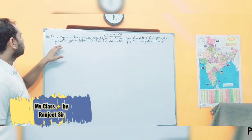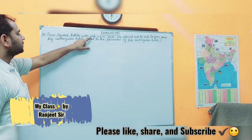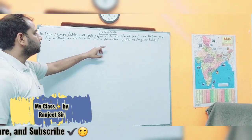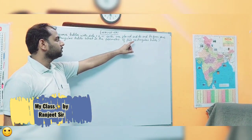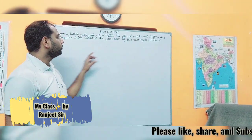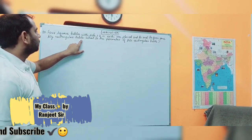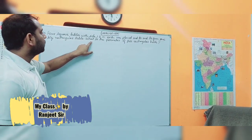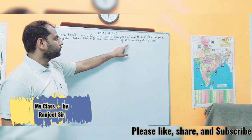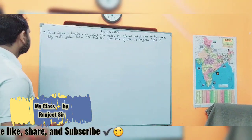4 square tables with side 1.2 meter each are placed end to end to form one big rectangular table. What is the perimeter of this rectangular table?